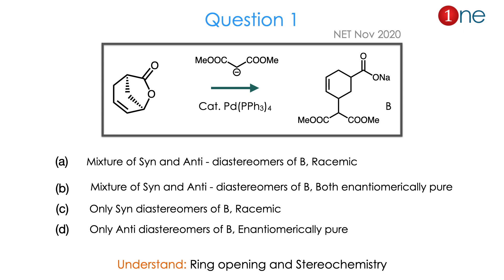Let us see question number 1. The starting material is a cyclic 7-membered ring lactone — an ester in cyclic form — with a methylene group inside and also an alkene. You are reacting it with palladium as catalyst, then with an anion. The ring opens, giving a salt of acid and an ester on the other side. The question asks whether product B is a syn/anti mixture, racemic, enantiomerically pure, or a specific diastereomer. The answer is C.